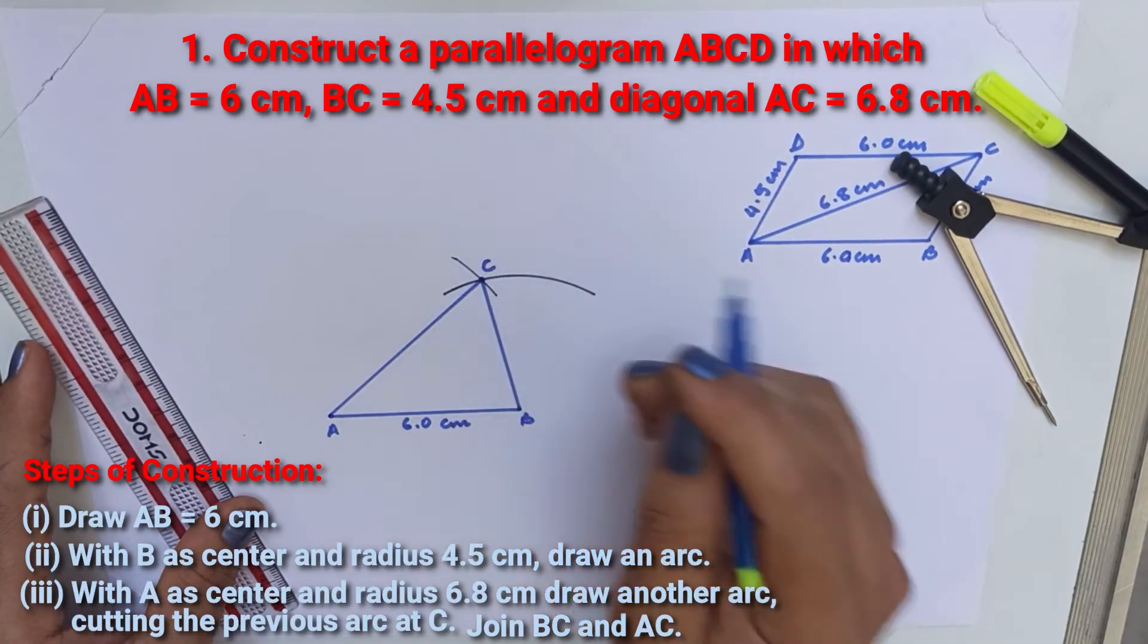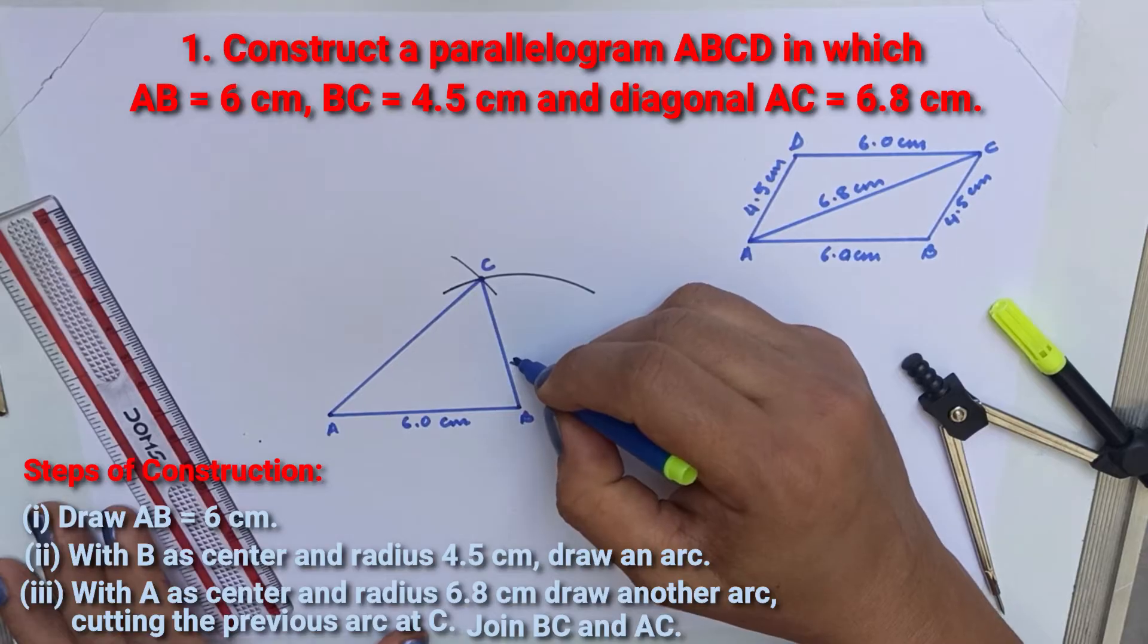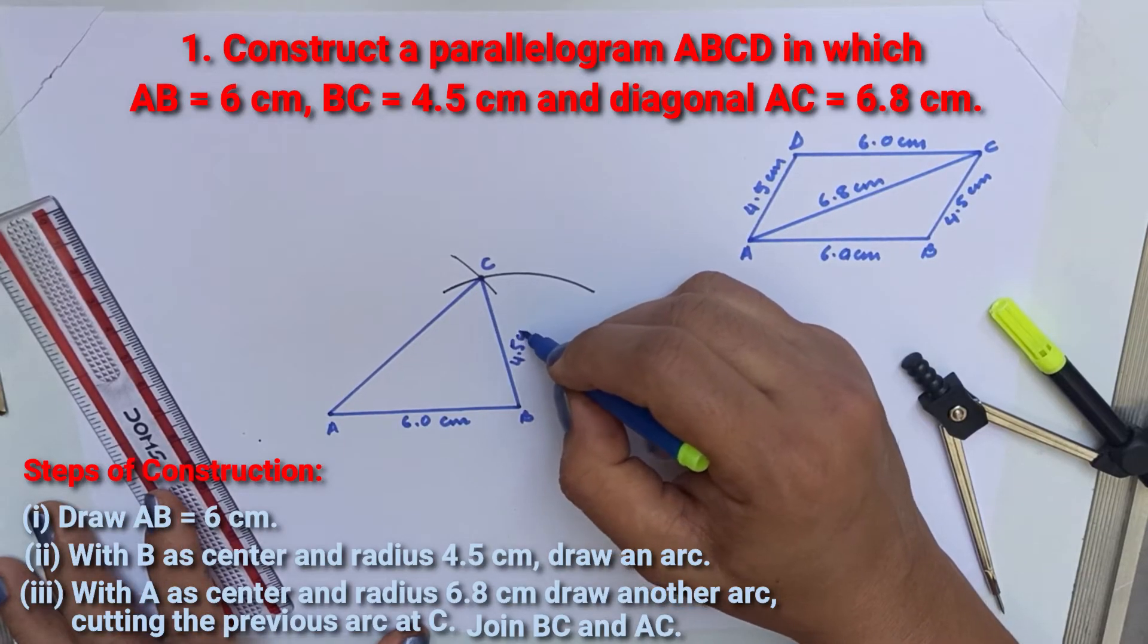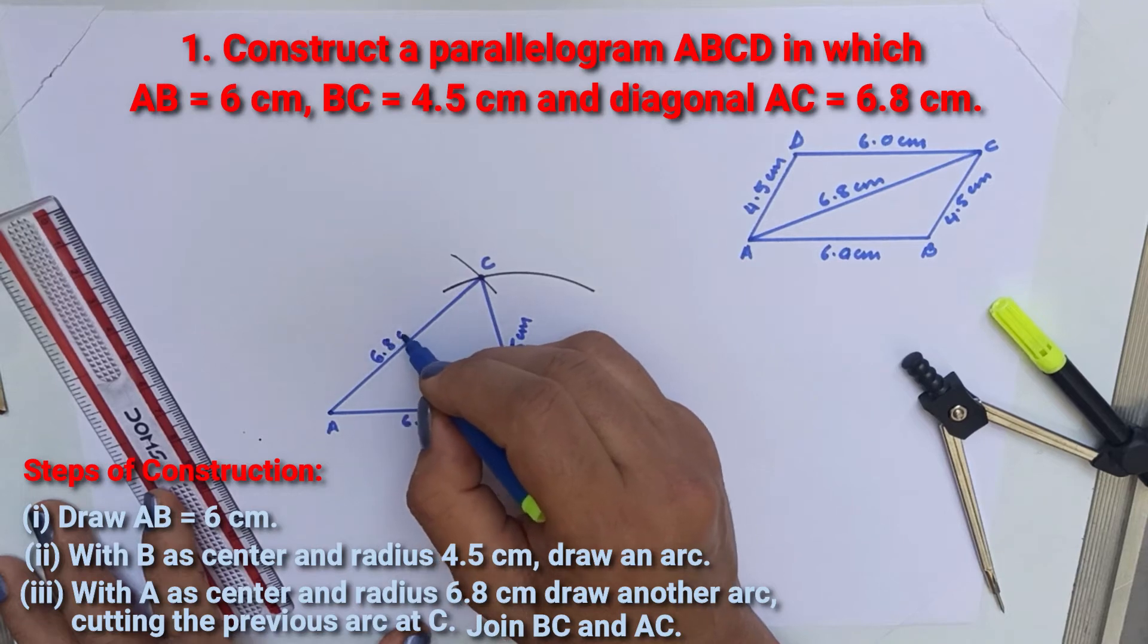Let this point be C. Write the measurements BC equal to 4.5 cm, AC is equal to 6.8 cm.